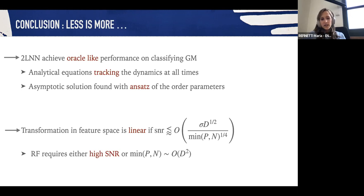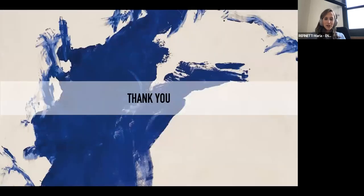On the random feature side, what we've learned is that the transformation to feature space is linear unless the SNR is bigger than a certain threshold quantity. This means that the random features require either very high SNR to learn or the minimum between the number of features and the number of samples to scale as the input dimension squared. I think I was maybe a bit quick, but thank you all for your attention.